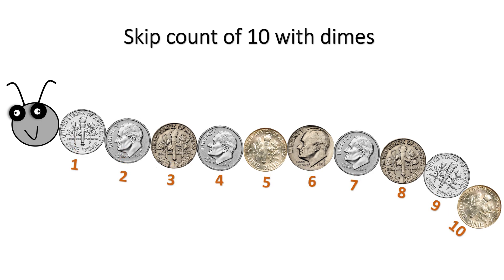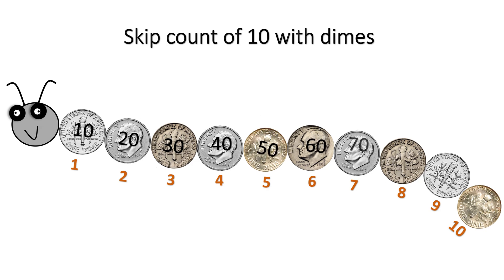Let's count the coins in the caterpillar. All coins are dimes, so we count by 10s. 10, 20, 30, 40, 50, 60, 70, 80, 90, 100.